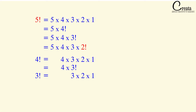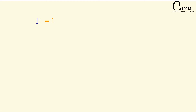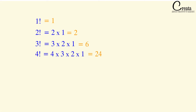Factorial is simply the multiplication of all whole numbers from the given number down to 1. Let's calculate the values of some useful factorials: 1! = 1, 2! = 2 × 1 = 2, 3! = 6, 4! = 24.